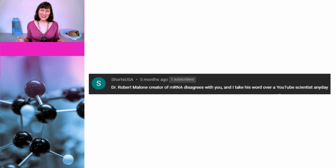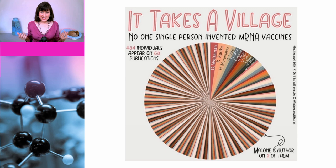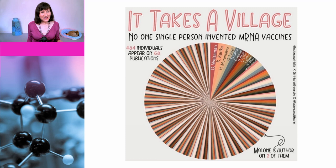The other type of false authority is when people falsely claim someone has expertise which they don't actually have. For example, a comment on one of my videos said: 'Dr. Robert Malone, creator of mRNA, disagrees with you, and I take his word over a YouTube scientist any day.' Now of course, mRNA first evolved billions of years ago, so clearly Robert Malone didn't create it. It is true that he did some early work important to the development of mRNA vaccines, but he did not invent them — no single person did. 484 individuals appear on 68 publications detailing the development of mRNA vaccines; Malone is an author on two of them.